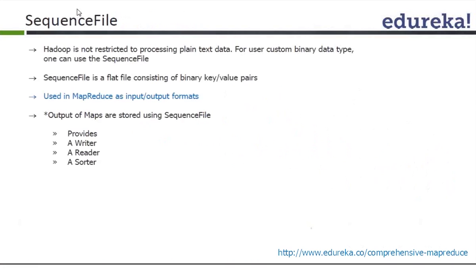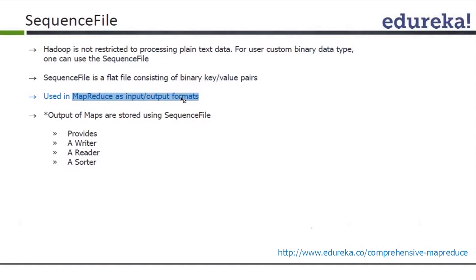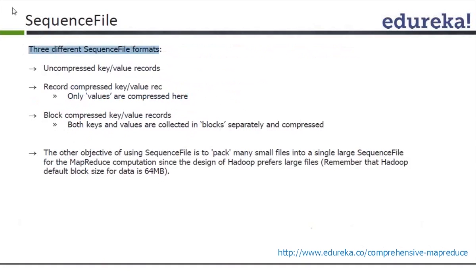To summarize distributed cache: upload the reference data to HDFS, use distributed cache to add the reference data to the job, and in the setup method retrieve it. Now let's talk about sequence files. Hadoop is not restricted to textual data — it can also process binary data. A sequence file is a flat file consisting of binary key-value pairs. The output of a mapper is stored in the local directory as a sequence file, which provides a writer, a reader, and sorting capability.